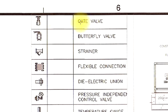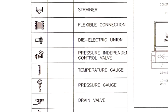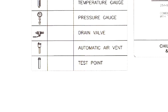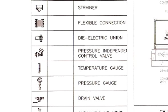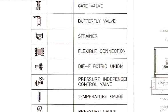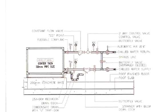You see here this is gate valve, this is butterfly valve, strainer, this is flexible connection, this is dielectric unions, this is pressure independence control valve. And this is temperature gauges. After temperature gauges you can see this one - pressure gauge and drain valve, air vent and test point. So these are the main valves we are installing to the FHU or AHU, greater than 2 inches or 50mm.